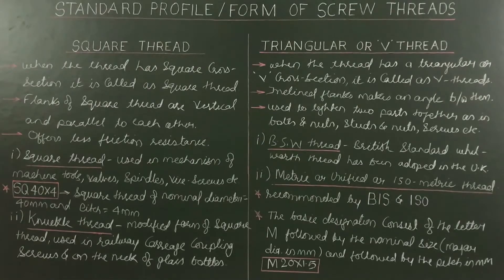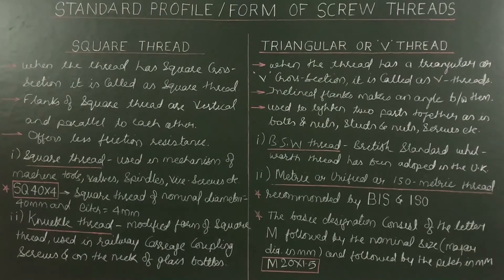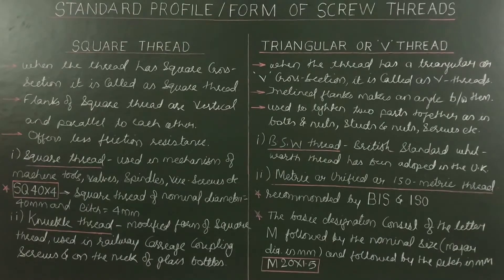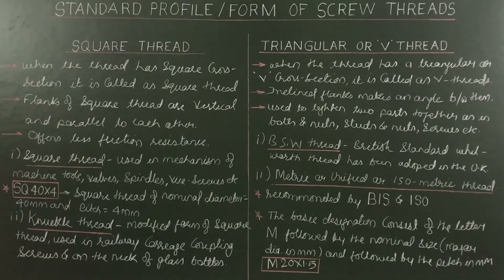When the thread has a triangular or V cross-section, it is called a V thread. All types of V threads have inclined flanks making an angle between them. It is used to tighten two parts together, as in bolt and nut, stud and nut, and screws. Types of V thread include BSW thread and metric thread.